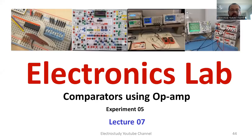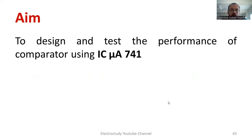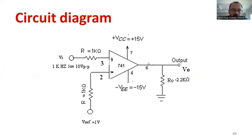Dear all, in this session we are going to demonstrate an experiment on comparators using an operational amplifier. We have to design a comparator using an op-amp IC. Here we are using the µA741 op-amp IC, and the same thing will be demonstrated.